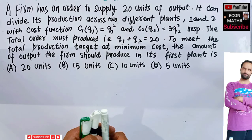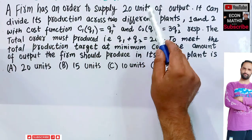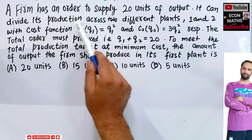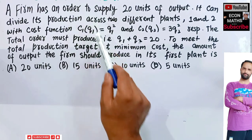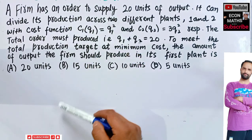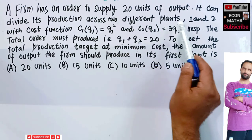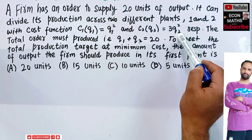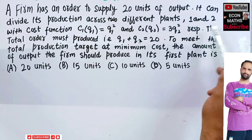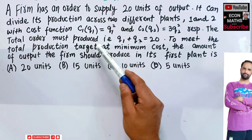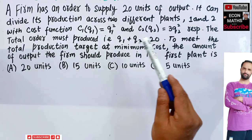In this video we will solve a problem on cost minimization. A firm has an order to supply 20 units of output. It can divide its production across two different plants: Plant 1 and Plant 2, with cost function in Plant 1 equal to Q1 squared. The cost in Plant 2 is C(Q2) equal to 3Q2 squared, where Q2 denotes the output in the second plant. The total order must be produced, that is Q1 plus Q2 is equal to 20, to meet the production target at minimum cost.